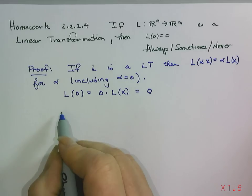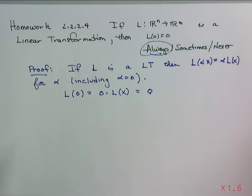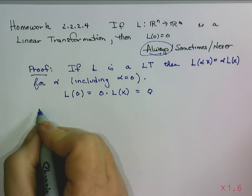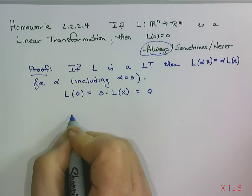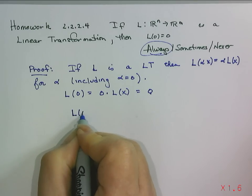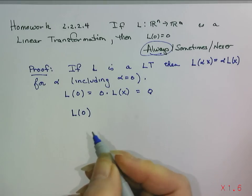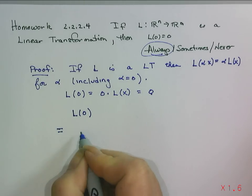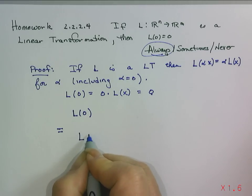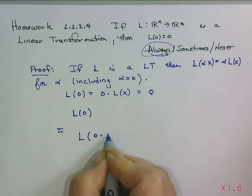There are many other proofs that also will do this. If I wanted to use the same style that I've been using in the past, what I might do is start with L of 0 and say that this is equal to L of 0 times x